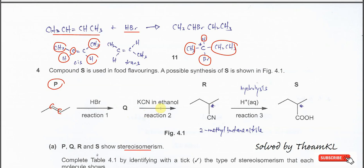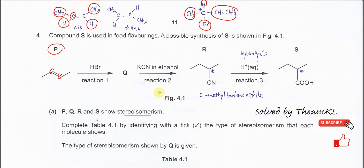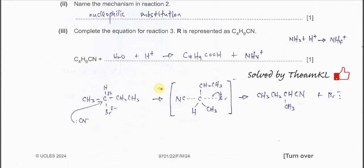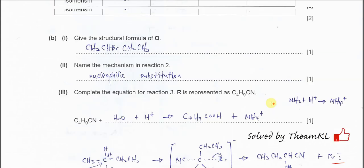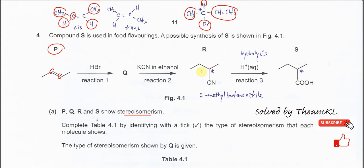Q further reacts with KCN in ethanol, undergoing substitution. The cyanide ion, acting as a nucleophile, attacks the partial positive carbon. An intermediate forms, the C–Br bond breaks, and the two electrons move to the bromide ion, forming bromide. This produces compound R, a nitrile.